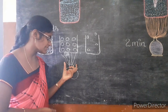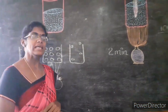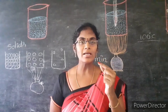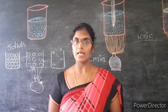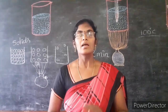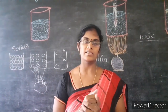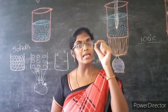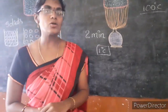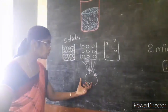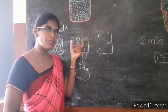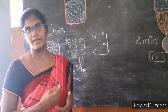This heat energy is called the latent heat of vaporization. The amount of heat energy required to change 1 gram of liquid to gas is called latent heat of vaporization. Specific heat is the heat energy required to raise the temperature by just 1 degree Celsius, whereas latent heat is the heat energy required to change the state of a substance from one state to another.